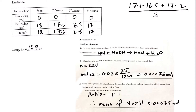The first accurate reading was 17.2, the second was 16.5, and the third was 17.0. When we add all three and divide by three, we get an average titre of 16.9 centimeter cube.